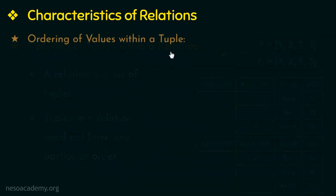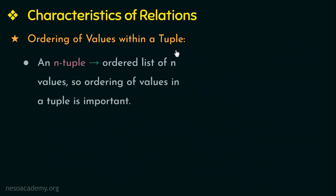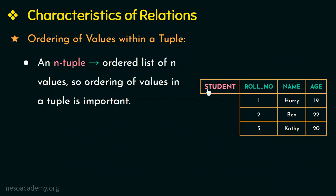The next characteristic of a relation is ordering of values within a tuple. As per the definition of relation, an n-tuple is an ordered list of n values. If I have a table or relation student with attributes role number, name, and age, and I take the values of the first tuple or first row, it has to maintain a particular order.